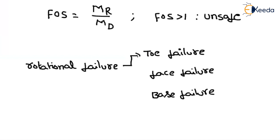From the name itself, we can understand: if it is toe failure, the failure mass will pass through the toe point. If it is face failure, the failure mass will cut along the face of the slope. If it is base failure, the failure mass will cut along the base. This classification can be identified depending upon the depth factor.